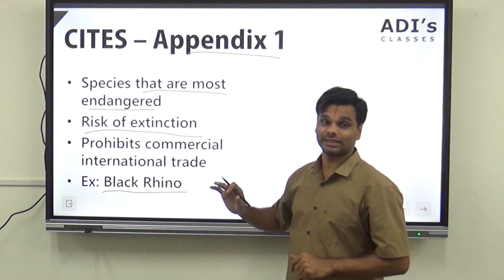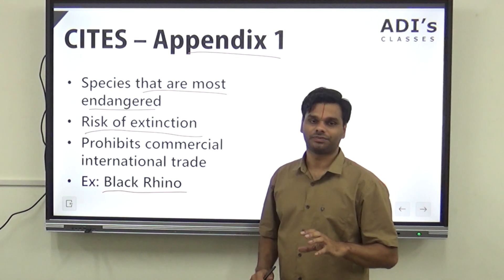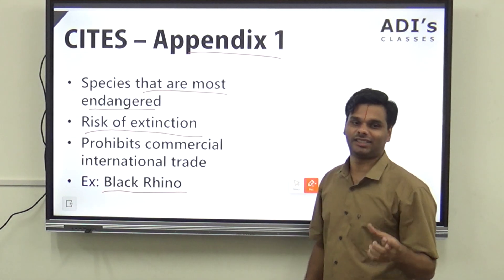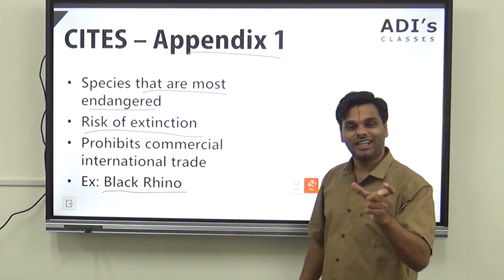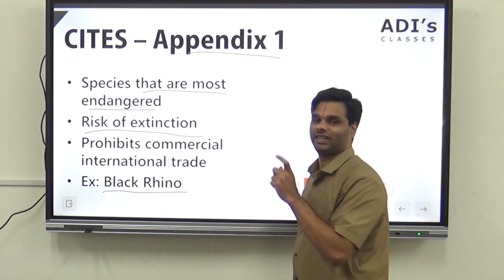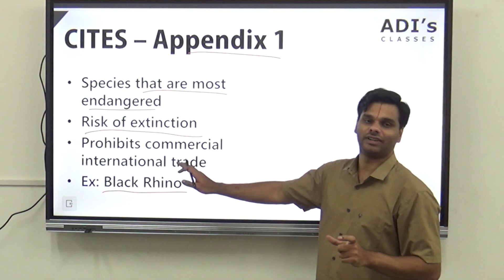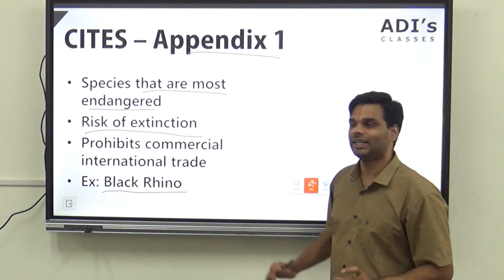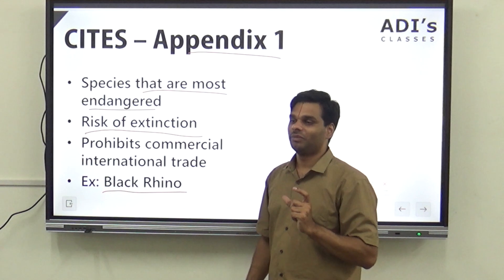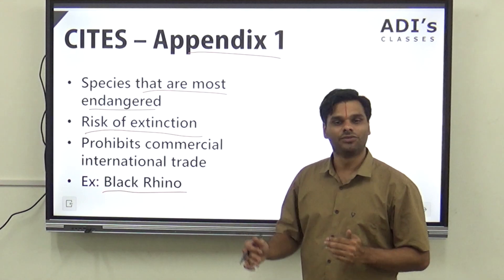For Appendix one species, commercial trade is prohibited. In fact, in the appendix of CITES, the wording they use is 'almost always prohibited' because they are not able to enforce it.